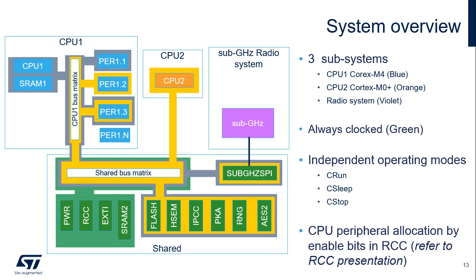The system resources such as RCC, PWR, EXTI, and SRAM2, connected on the shared bus, will always be clocked when one of the CPUs is in C-Run and the system is in Run mode. The other peripherals on the shared bus may be enabled to operate with CPU1 and/or CPU2. The sub-gigahertz radio system is connected to the bus matrix via the sub-gigahertz serial peripheral interface, and may operate when both CPUs are in C-Stop mode. In this case, all other peripherals and all bus matrices are stopped, and the system may be in Stop or Standby mode.